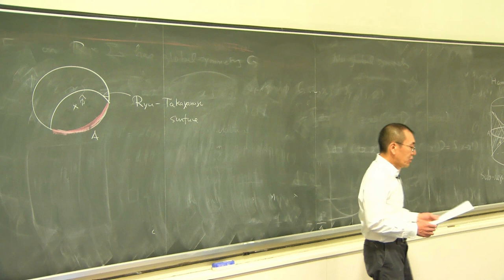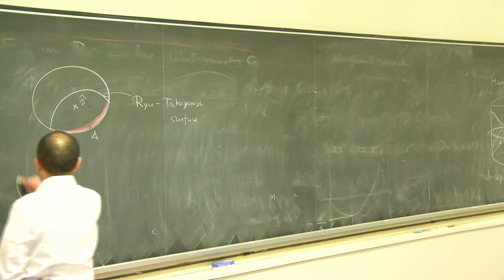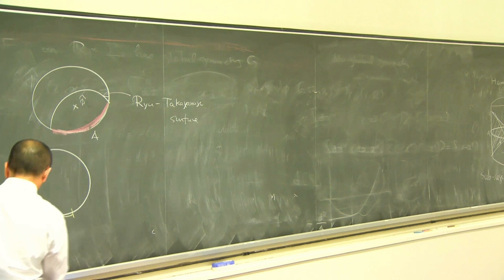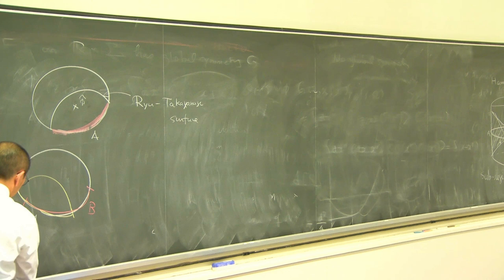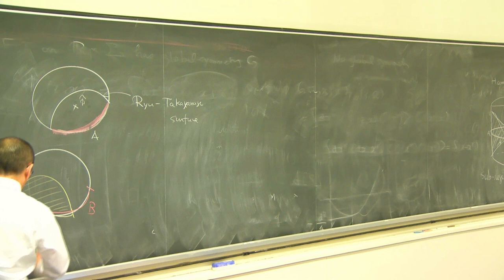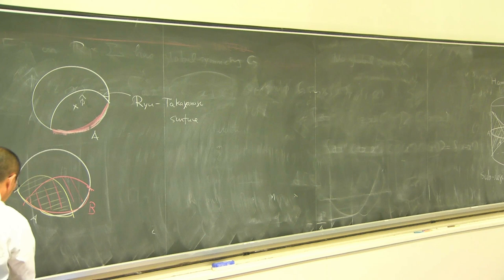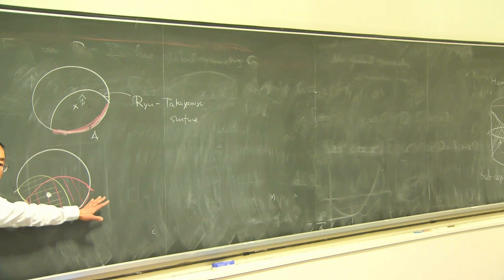This leads to a problem. Suppose you consider two regions: region A and region B. For each region, there is a causal or entanglement wedge. If you have a local operator residing in a region that lies in both wedges, then the same local operator can be expressed as smearing over the yellow region A or the red region B. This raises the question of whether the bulk-boundary map is unique.